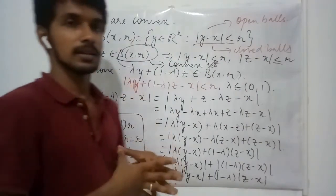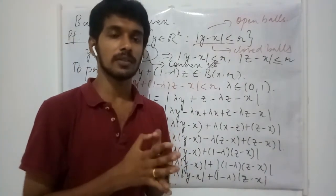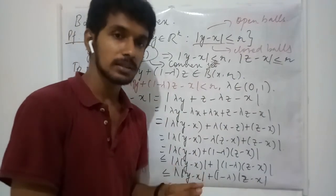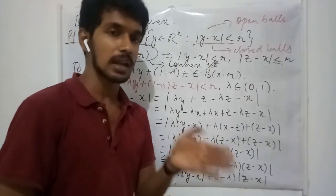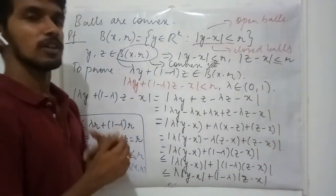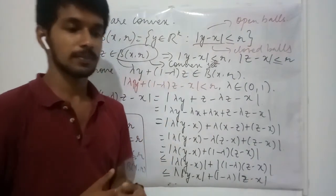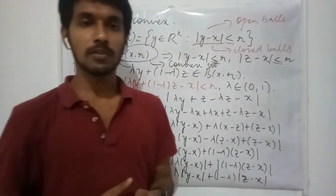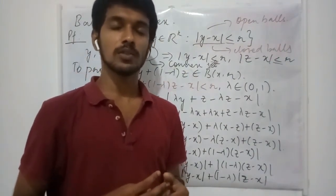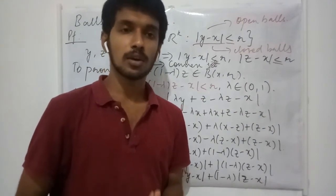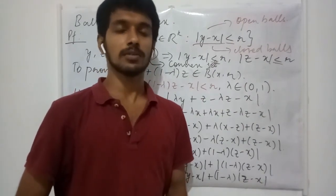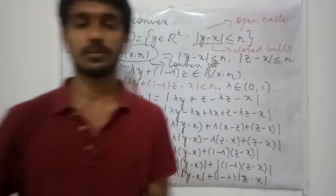In this lecture, what we have done is defined a convex set and seen examples of a convex set in R, R2, and R3. Then we proved that balls are convex. Thank you for watching this lecture. If you have any doubts, you can post them in the comment section, and your queries will be clarified within 24 hours.